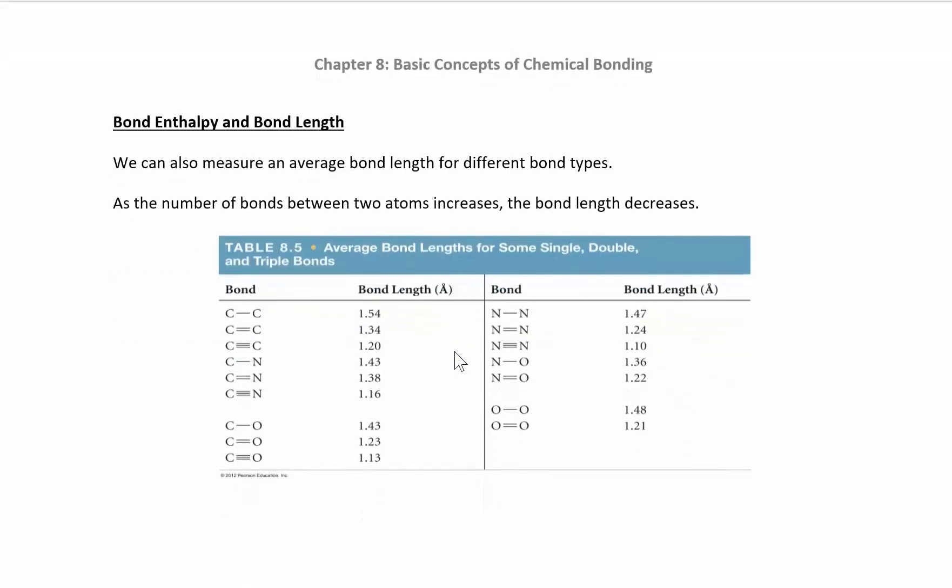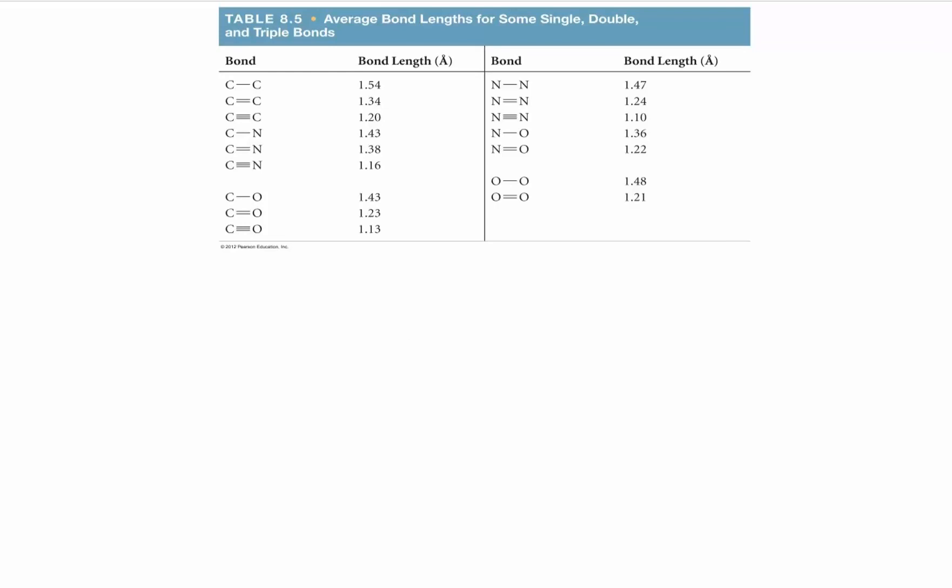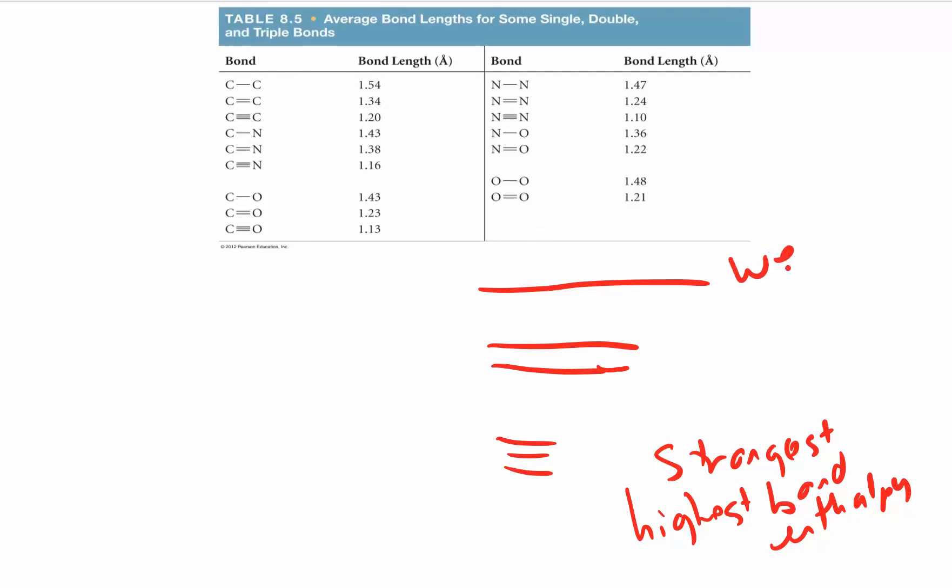The last thing we want to mention is looking at bond enthalpy and bond length and the relationship between those two. A C-C single bond is 1.54 angstroms, just a unit of measurement. 1.34 for a double bond, 1.2 for a triple bond. It turns out the triple bond is the strongest bond. It's going to have the highest bond enthalpy, so it's going to take the most energy to break it. The single bond is the weakest bond, has the lowest bond enthalpy.